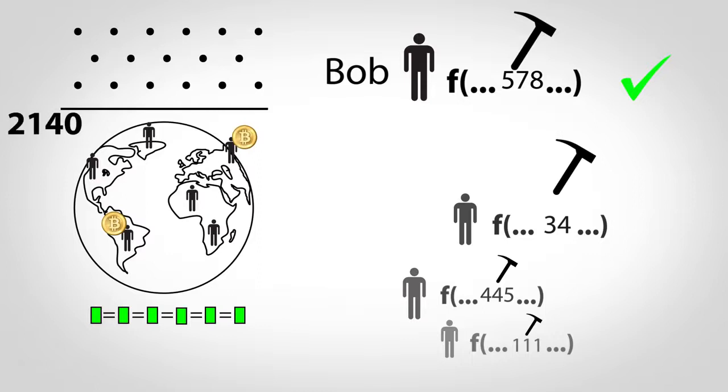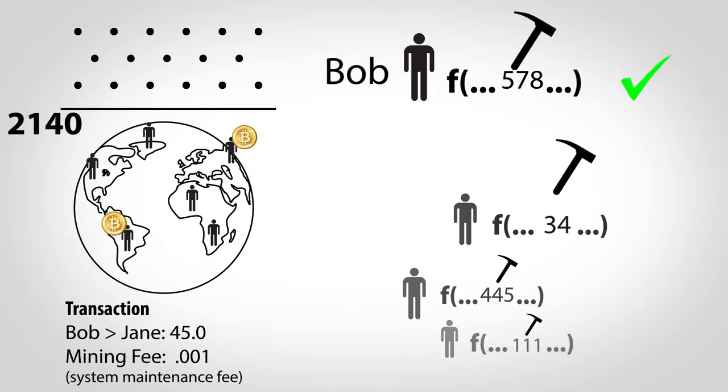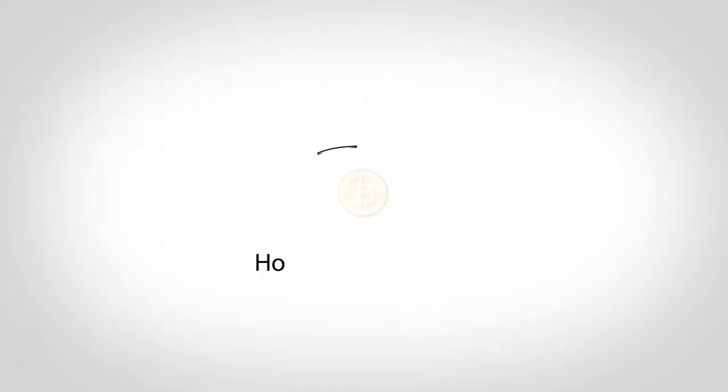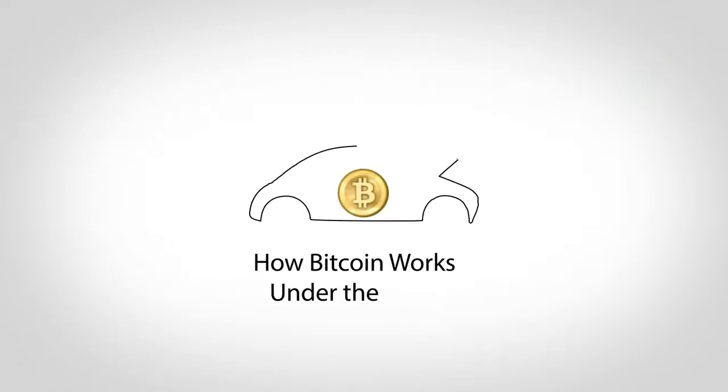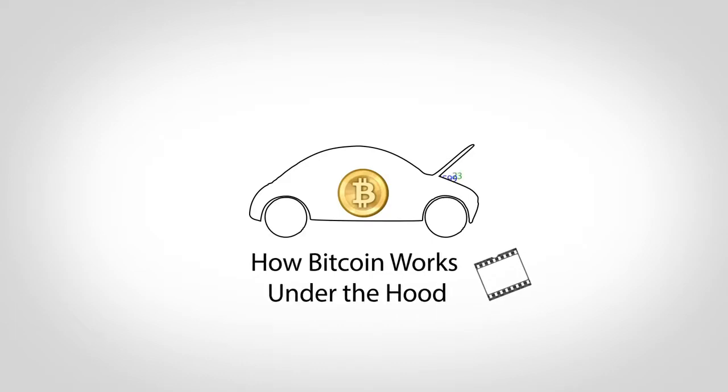In fact, sometime around 2140, no more money will be created, and participants will only be paid from fees added on to transactions. I hope this gives you a quick sense for how Bitcoin works. If you'd like a more detailed summary, check out my 22-minute video, How Bitcoin Works Under the Hood.